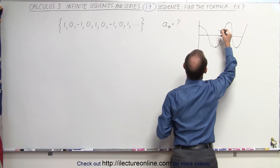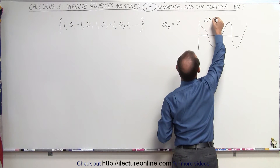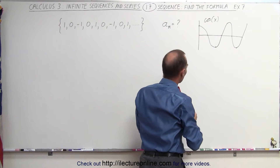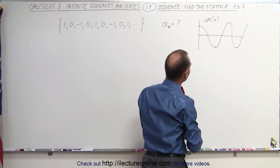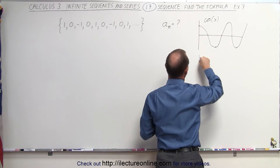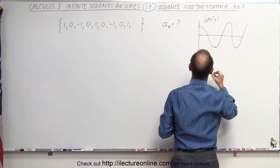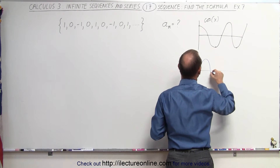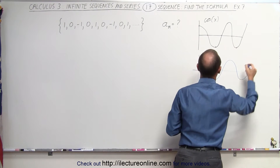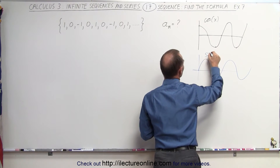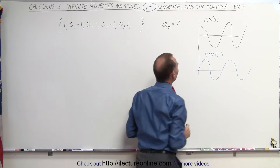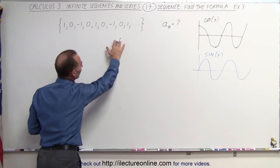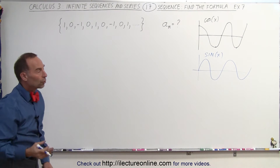So it looks like a trigonometric function. And in this case, that looks like a cosine function — cosine of X, so to speak. Of course, we could offset that and say if we start with 0 and then go up, we can have a sine function like this. So this is a sine function; that's a cosine function.